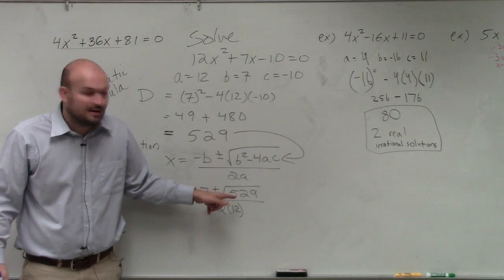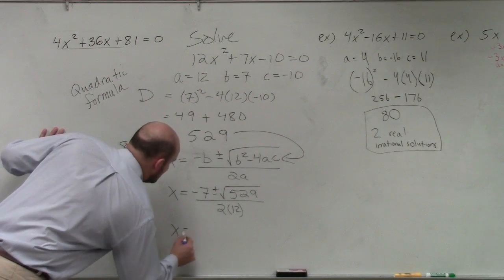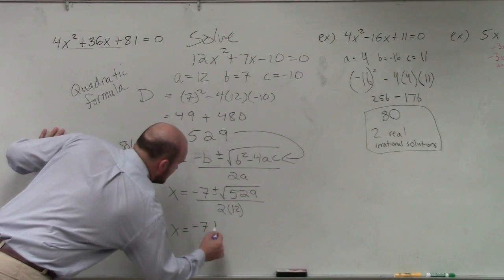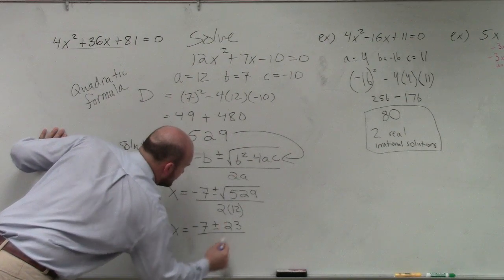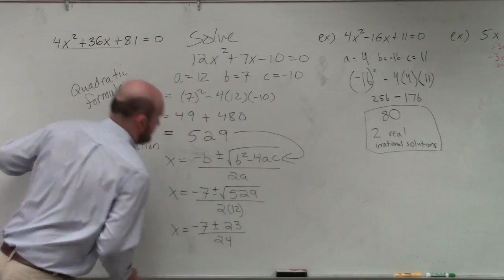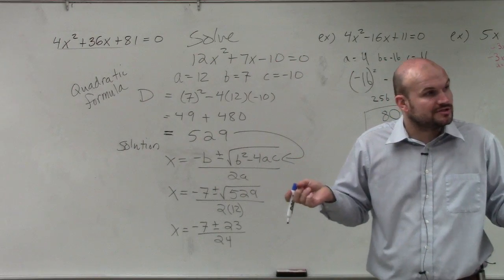Now, we know what the square root of 529 is, right? It was 23. So I have x equals negative 7, plus or minus 23, over 24. Then remember, guys, that you said it was two real rational solutions, right?